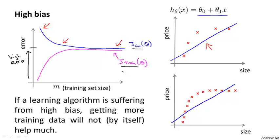This implies something very interesting: if a learning algorithm has high bias, as we get more and more training examples, the cross-validation error isn't going down much — it's basically flattened out. So if a learning algorithm is already suffering from high bias, getting more training data by itself will not help that much. Knowing this can prevent you from wasting a lot of time collecting more training data where it might just not end up being helpful.